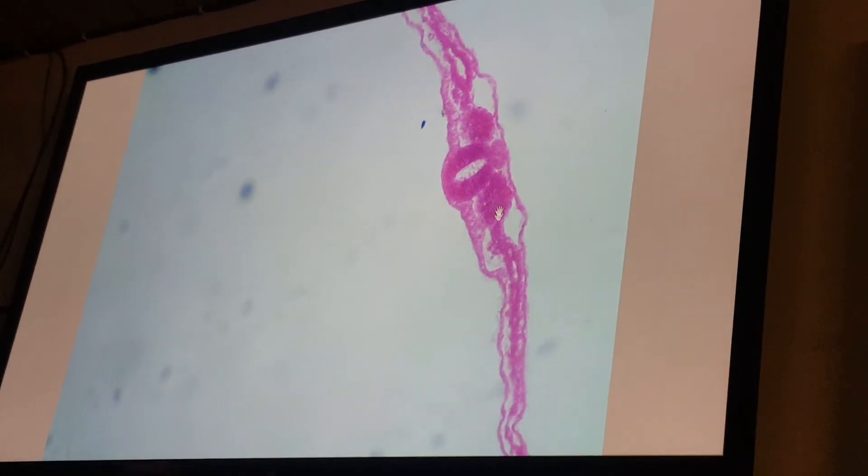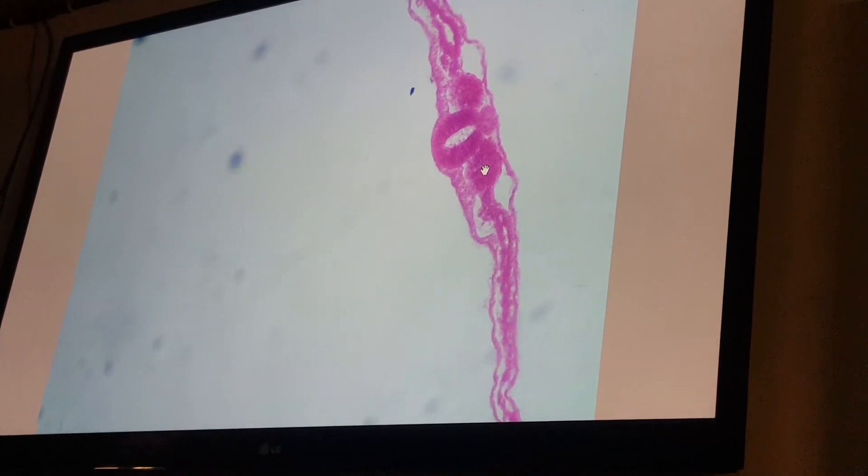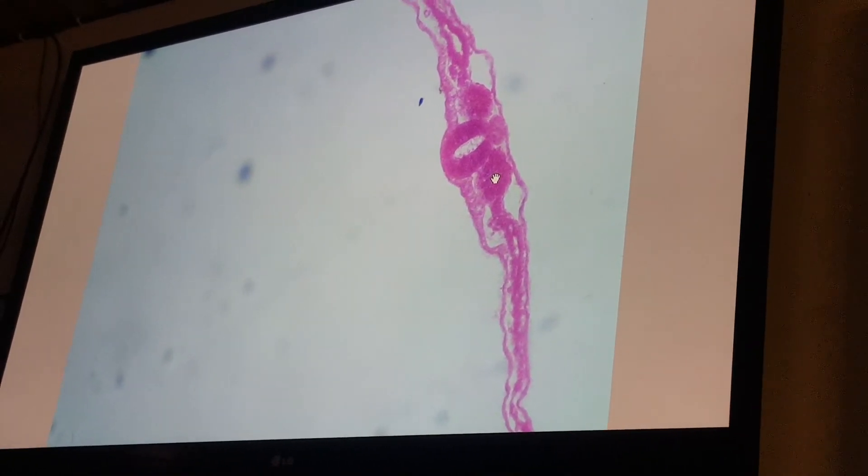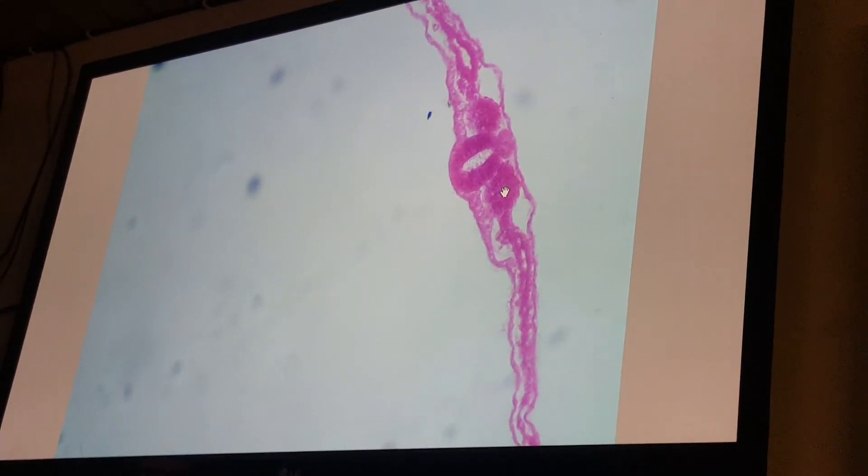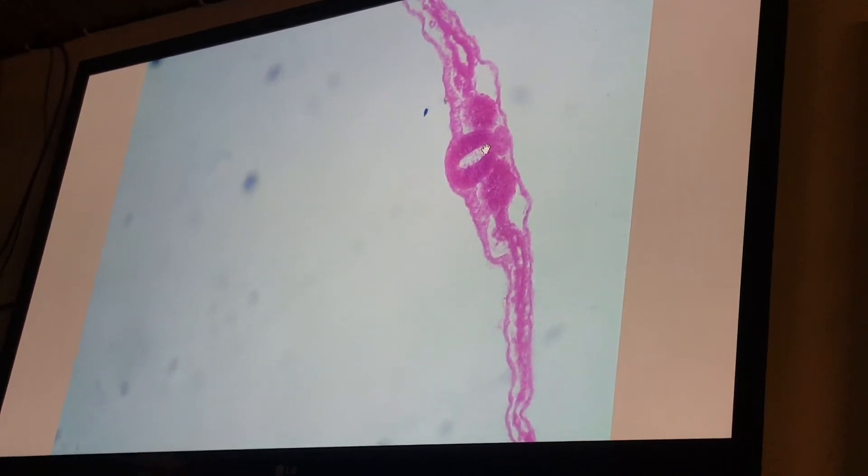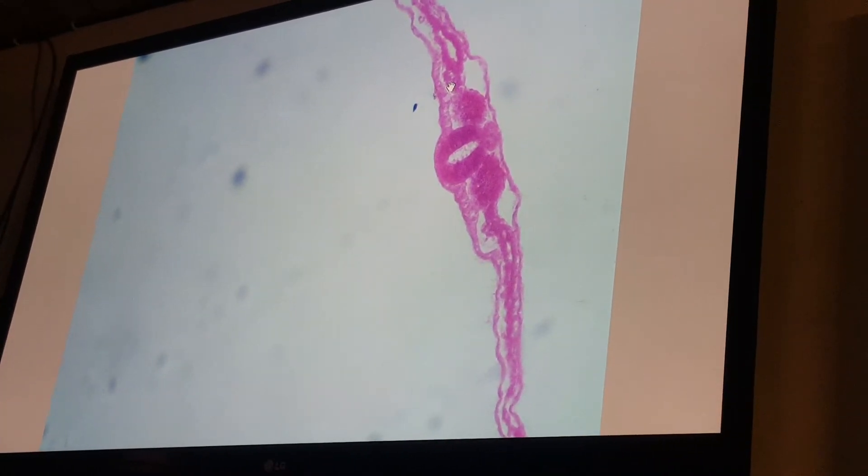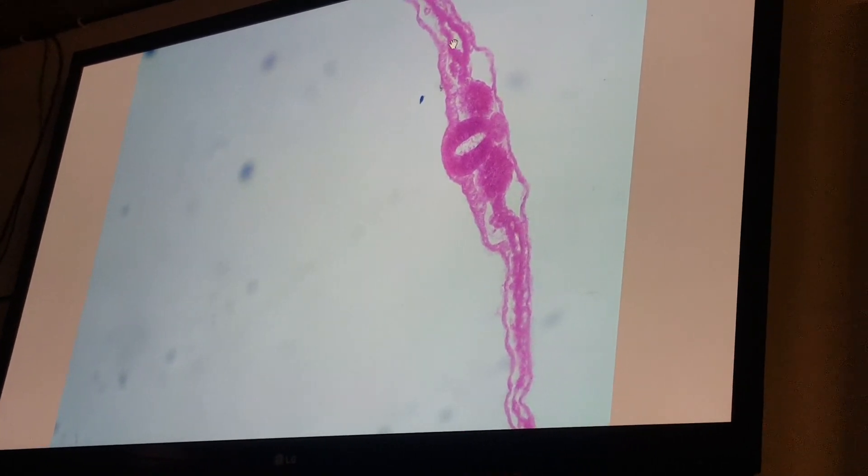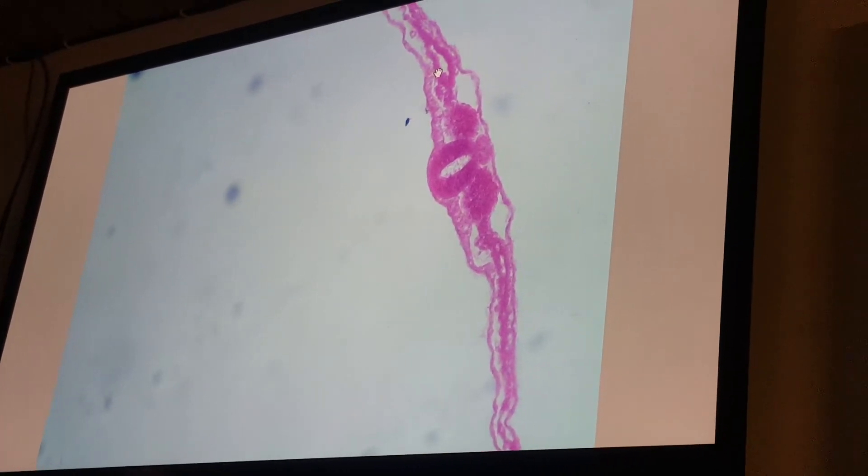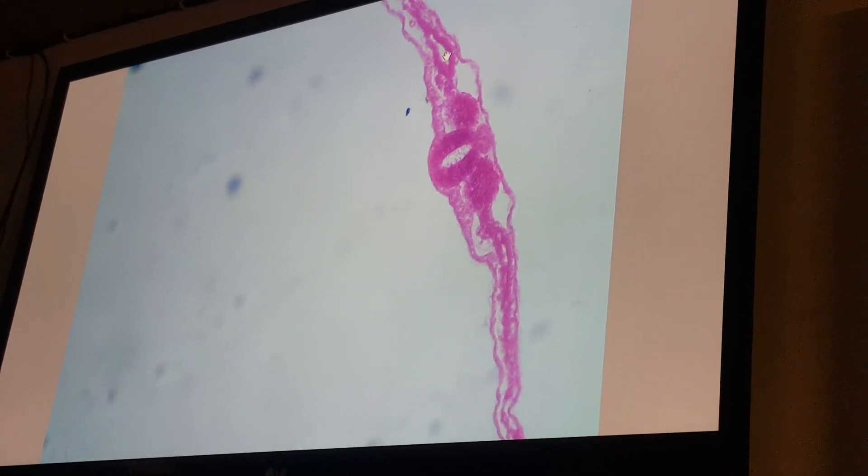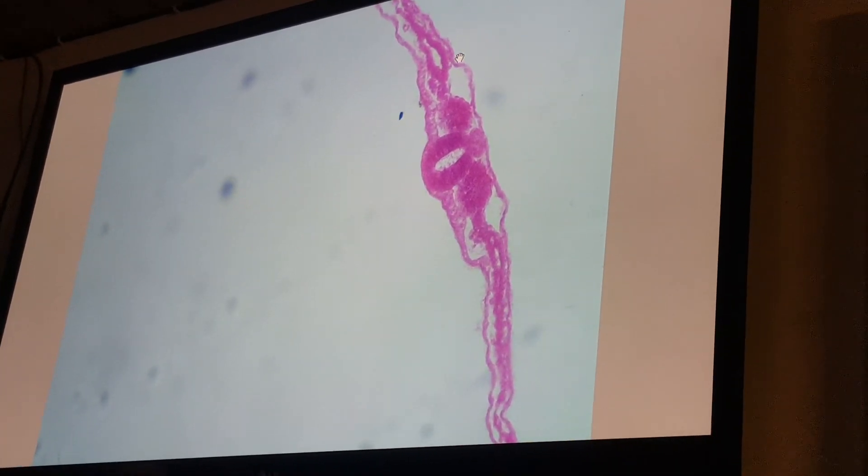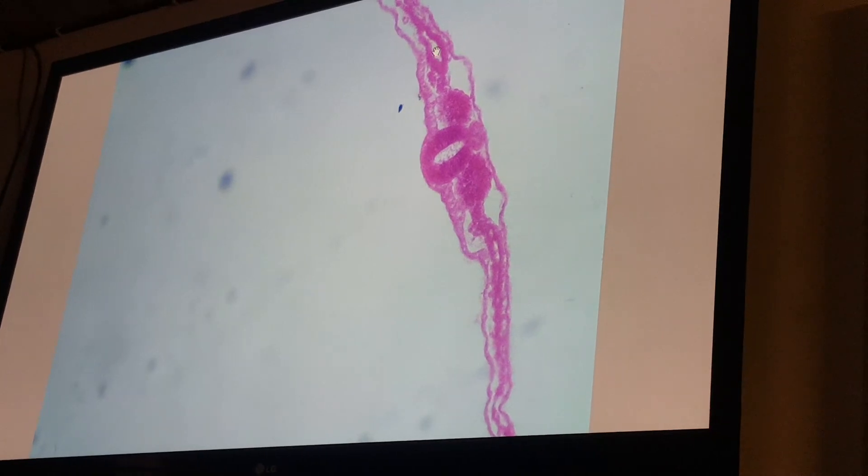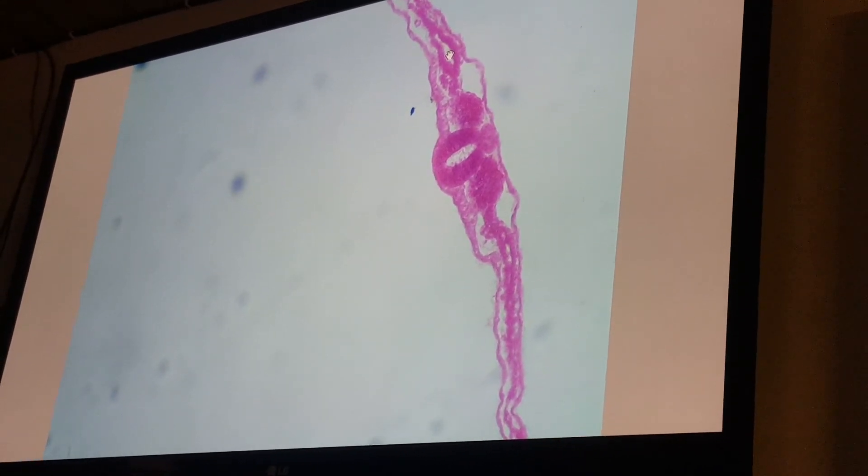Now the paraxial mesoderm forming the differentiated somite. Still, the intermediate mesoderm, the lateral plate, somatic adjacent to the ectoderm, visceral lateral adjacent to the endoderm, and this cavity here, intraembryonic cavity.